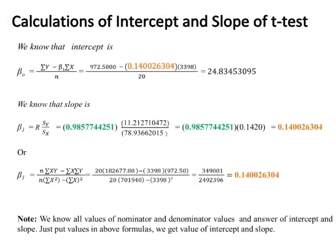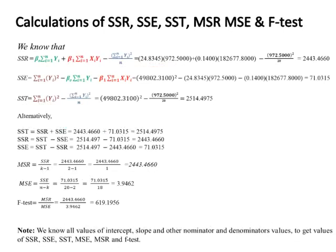By putting values into formulas, we get: intercept = 24.8345309 and slope = 0.14000263. For SSR, SSE, SST, MSR, MSE, and F-test, by substituting values into formulas we get the following results.